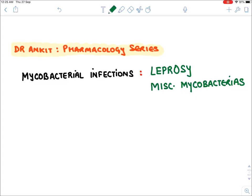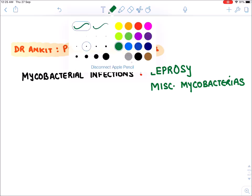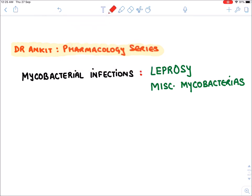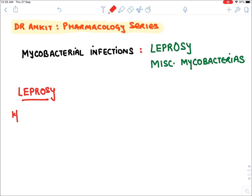Let's discuss other mycobacterial infections like leprosy and miscellaneous mycobacterias. Leprosy is also known as Hansen's disease and it is caused by a bacteria known as Mycobacterium leprae.